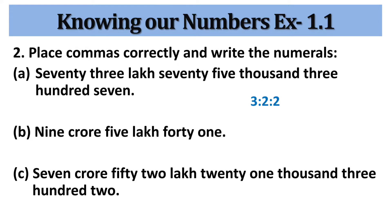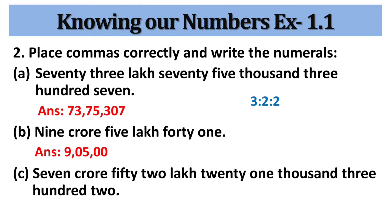This means starting from the right, the first comma is placed after 3 digits, then the next commas are placed after every 2 digits. We get the answer 73,75,307 — that is 73 lakh 75,307. Similarly, the answer to the next problem is 9,05,41 lakh.